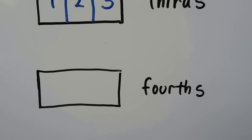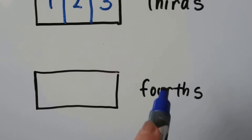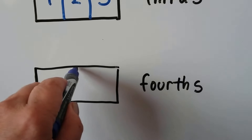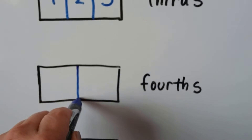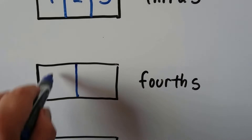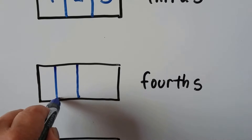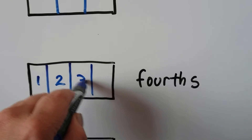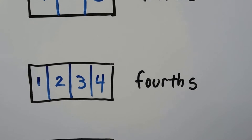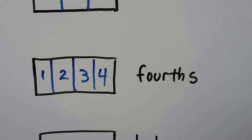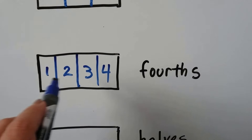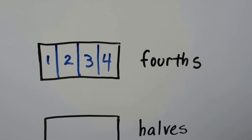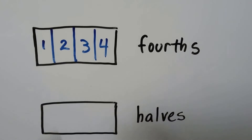What if we wanted to make fourths — four equal parts — for a rectangle? We could draw a line to make two halves, and then draw another line to make halves of each half, giving us one, two, three, four. If we used a ruler and measured it, we would get exactly equal parts.